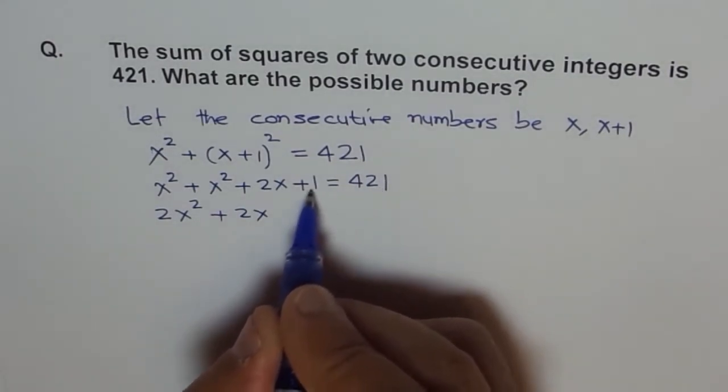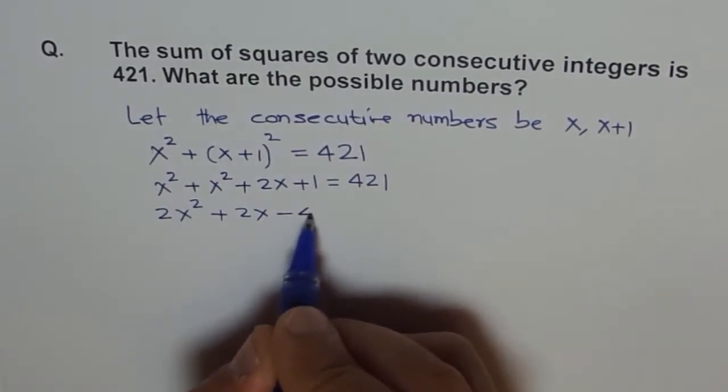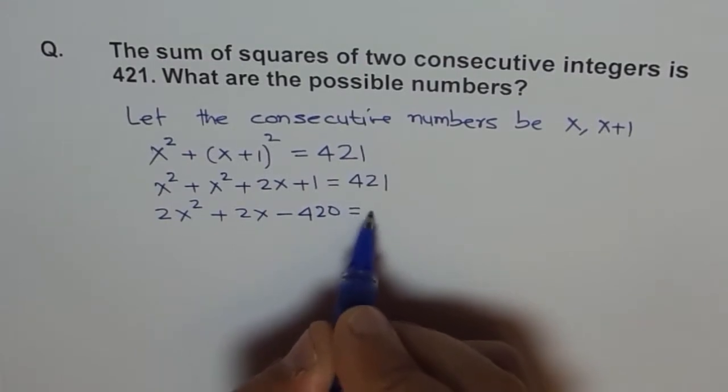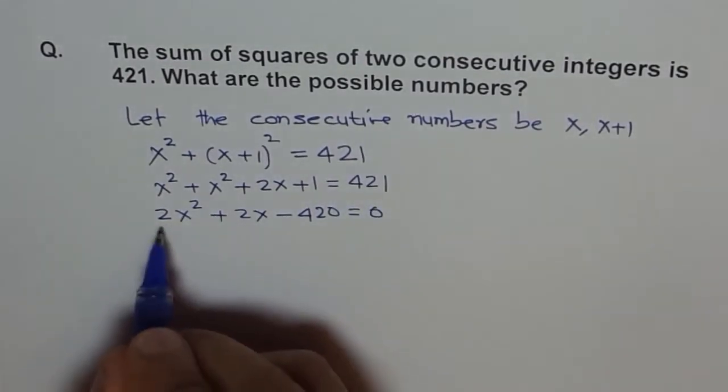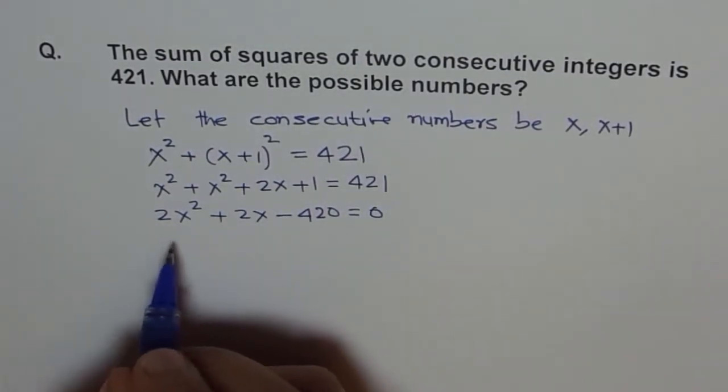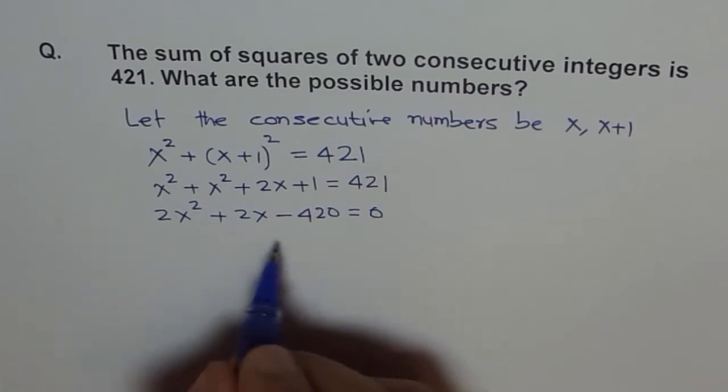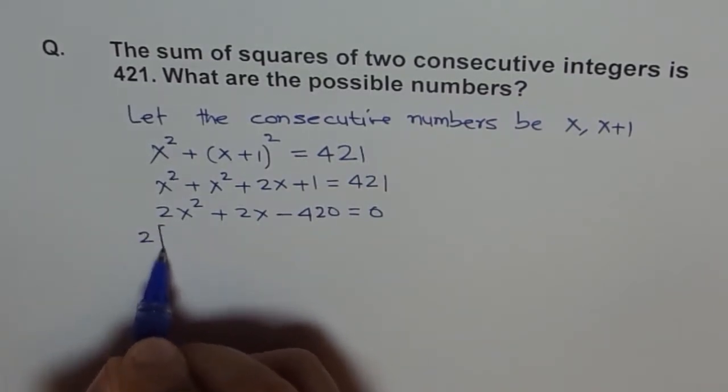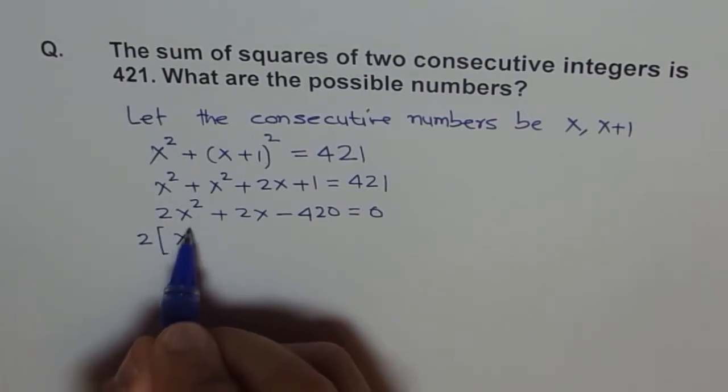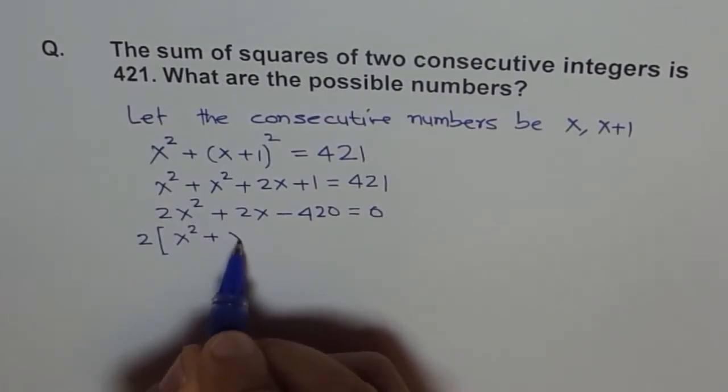Now we can take 2 common. So I'll divide by 2 or I can take 2 common. It's a good practice to keep 2 like that. So we'll say 2 times (X² plus X minus 210) equals to 0.